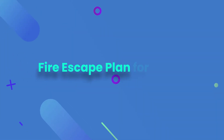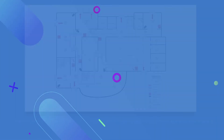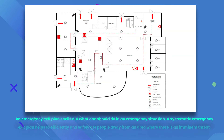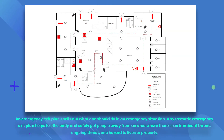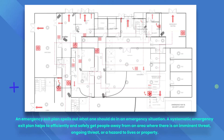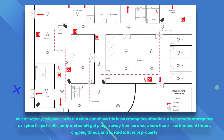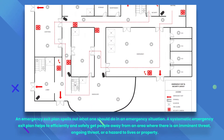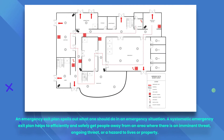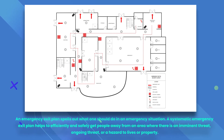A fire escape plan for Word is an emergency exit plan that spells out what one should do in an emergency situation. A systematic emergency exit plan helps to efficiently and safely get people away from an area where there is an imminent threat, ongoing threat, or a hazard to lives or property.